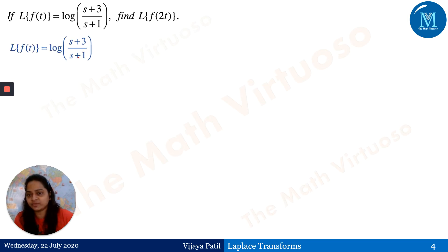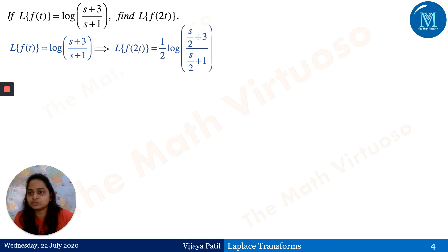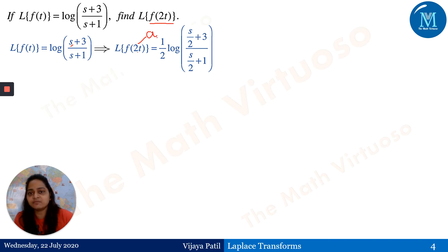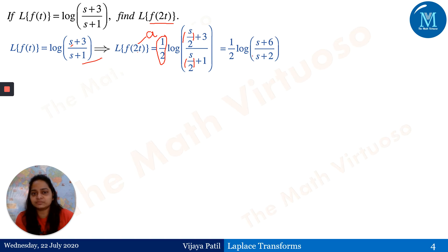This is my F(s). The Laplace transform of f(2t) equals (1/2) times log of [the same expression with every s replaced by s/2]. Here a = 2, so every s is replaced as s/2. After replacing s with s/2 throughout and keeping the remaining constants the same, we get the final answer by simplification.